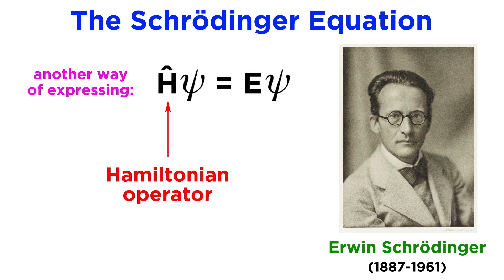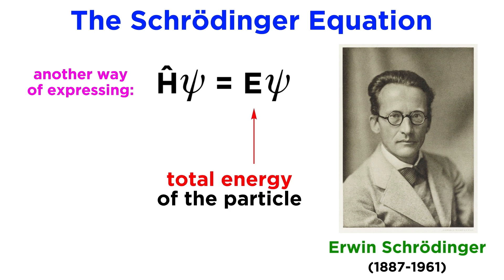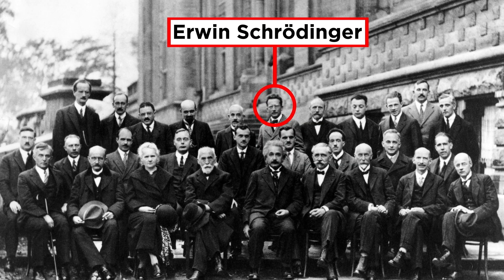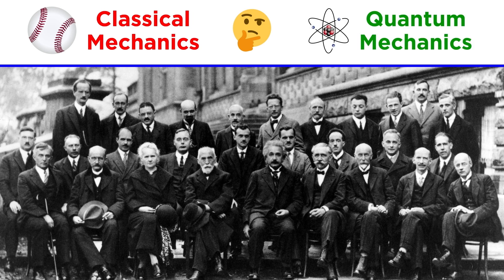Here is the Schrödinger equation, with this being called the Hamiltonian operator, a set of mathematical operations representing the total energy of the particle. Psi, once again, is the wave function that is used to describe the probability distribution of the particle, and E is the actual value of the total energy of the particle. The work of Schrödinger and others that followed served to outline the foundation for quantum mechanics, which just in the way that classical mechanics accurately describes the motion of classical macroscopic objects, quantum mechanics is now the mathematical model that is able to describe the motion of quantum objects.